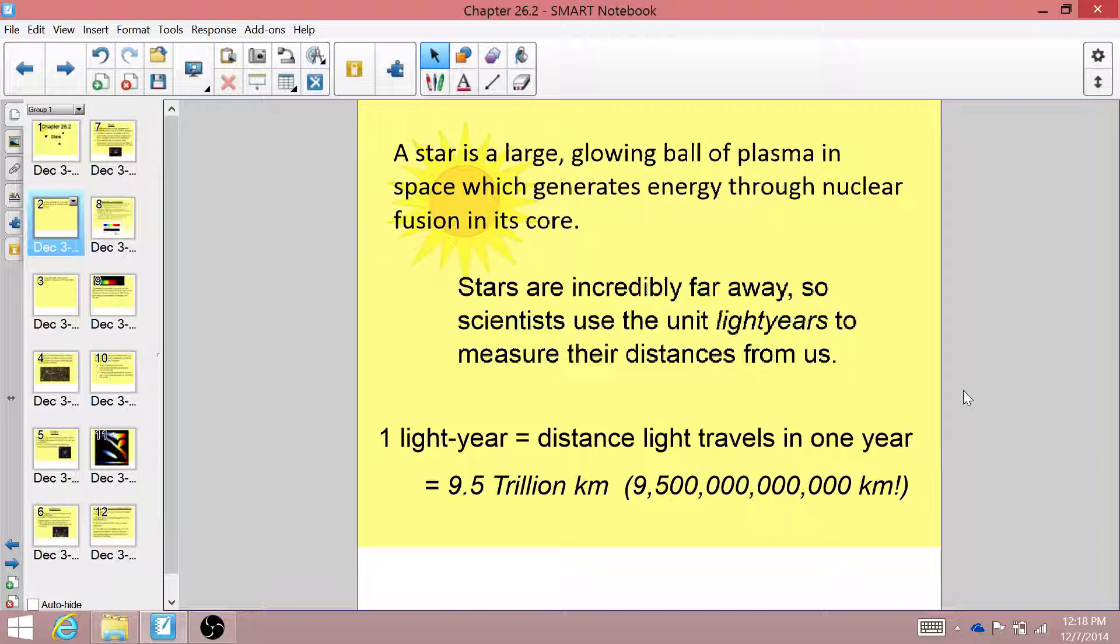So a light year is huge, and it turns out that other than the sun, the closest star to us is over four light years away. So it's 40 trillion kilometers away, which is ridiculous.